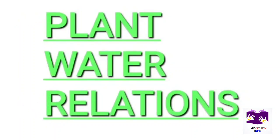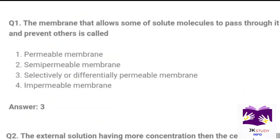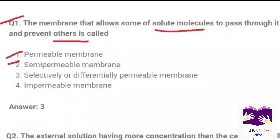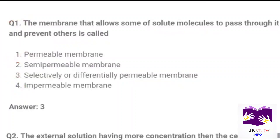If you like this video, please like it and share it with your friends. First question: The membrane that allows some solute molecules to pass through it and prevents others is called? Option 1: permeable membrane. Option 2: semi-permeable membrane. Option 3: selectively or differentially permeable membrane. Option 4: impermeable membrane. Correct option is Part 3: selectively or differentially permeable membrane.